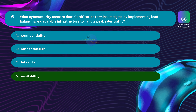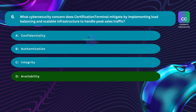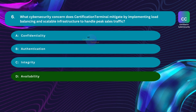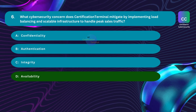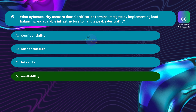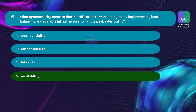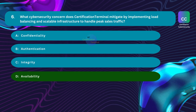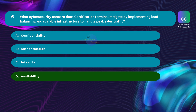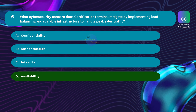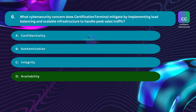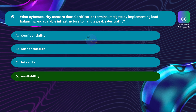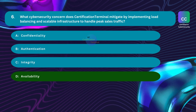In cybersecurity, availability refers to the accessibility and usability of data and resources for authorized users whenever they need it. By implementing load balancing and scalable infrastructure, Certification Terminal ensures their website remains available even during high traffic. Load balancing distributes incoming traffic across multiple servers, preventing any single server from becoming overwhelmed. Scalable infrastructure allows the system to adapt to changing demands. Confidentiality, integrity, and authentication are not directly mitigated by load balancing.